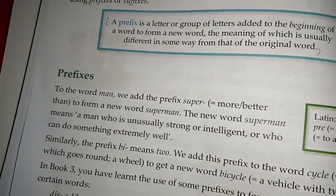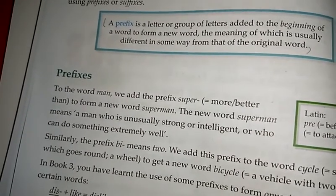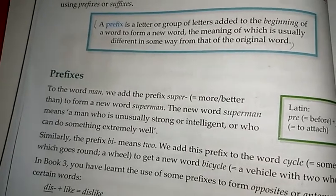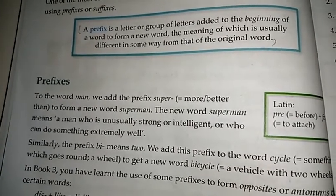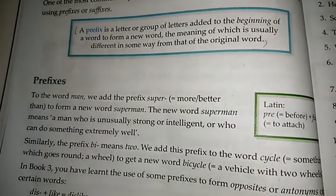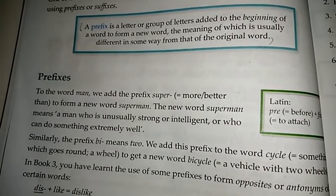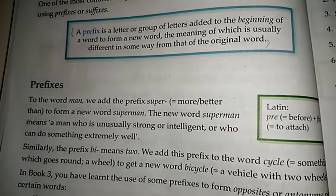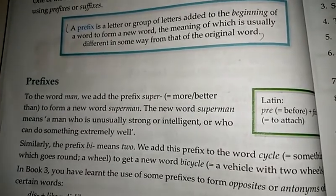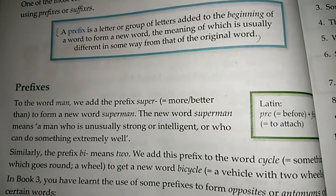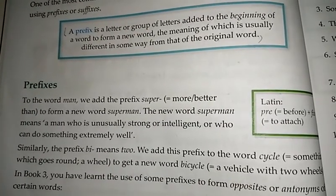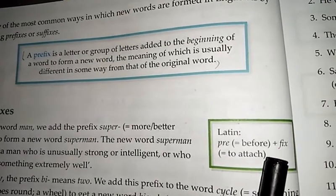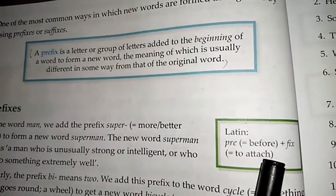For example, we add the prefix 'super' to the word 'man' to form a new word: Superman. The new word Superman means someone who is unusually strong or intelligent. Just a man means an ordinary man, but when we put 'super' before it, it means someone much more capable — the very best. You can see the Latin roots: 'pre' means before, and 'fix' means to attach.